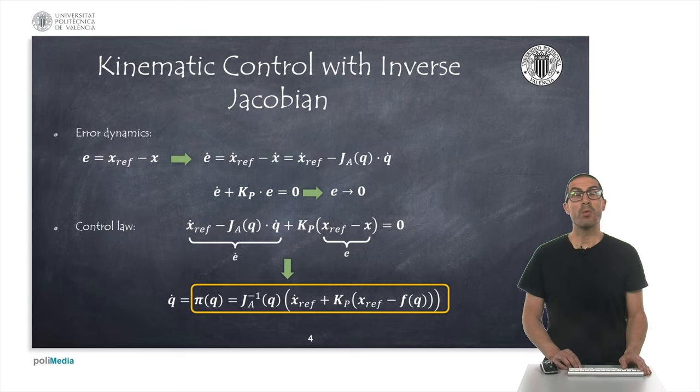Now, we impose the error dynamics will tend to zero if we select a proper gain matrix as shown. If we replace the expressions of the error and its derivative into the error dynamic equation, we will get a state feedback control law in which the joint velocities become the control action to be applied. As we can clearly see, the main requirement for this controller is to be able to compute the inverse of the Jacobian. This is not possible if the robot is on a singular configuration.